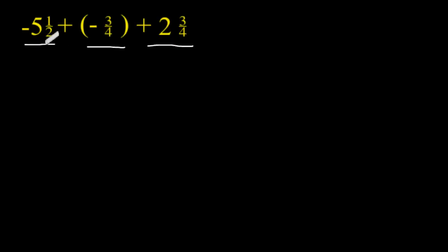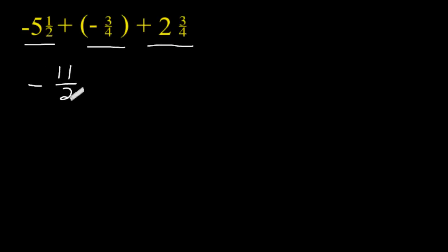The first thing that I am going to do is rewrite this mixed number as an improper fraction. So instead of negative 5 and 1 half, let's express this as negative 11 halves. And then we are going to add negative 11 halves to negative 3 quarters.